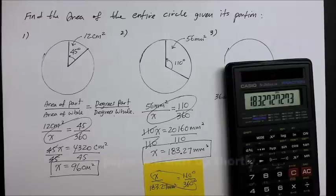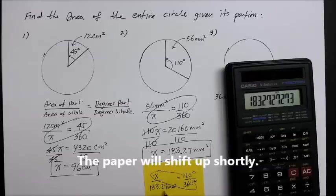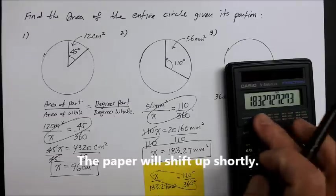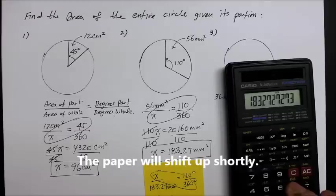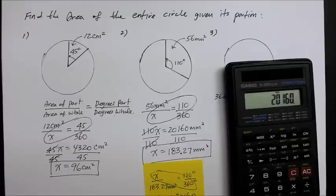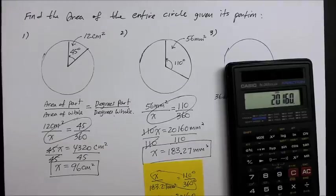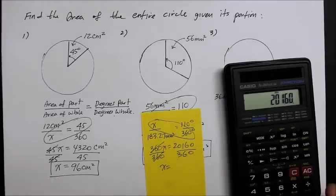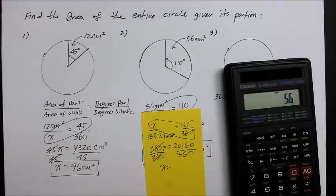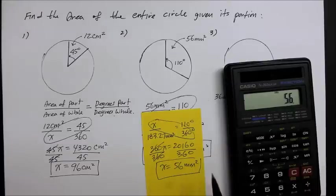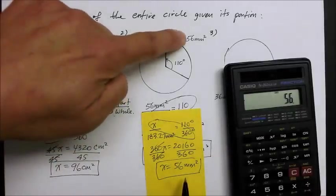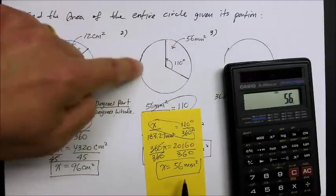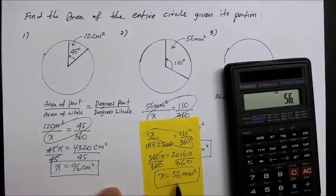So, if we use the same method, are we able to find the fact that 56 is the part, which is 110 degrees? So, we go x times 360. So, that's 360x. 183.27 times 110. So, let's take that same number that's already up here. Times 110 cross multiply. And that gives us 20,160. Now, divide the coefficient 360 to both sides. So, 360s simplify. x equals 20,160 divided by 360. That's going to equal, holy moly, there it is. 56 millimeters square. So, either way works, as long as you know either the part or the other big portion, or the area, I mean, the whole entire thing, you are able to find either or of the element.